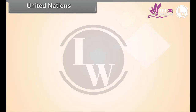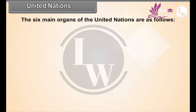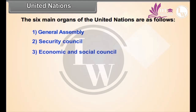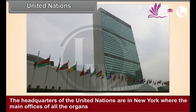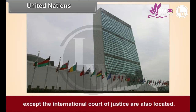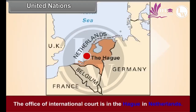The six main organs of the United Nations are as follows: 1. General Assembly, 2. Security Council, 3. Economic and Social Council, 4. International Court of Justice, 5. Trusteeship Council, 6. Secretariat. The headquarters of the United Nations are in New York, where the main offices of all the organs except the International Court of Justice are also located. The office of the International Court is in The Hague in Netherlands.